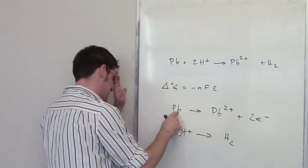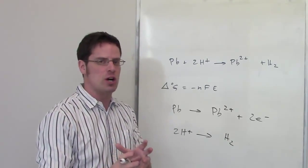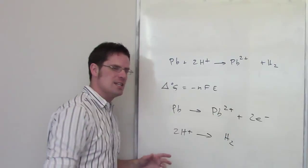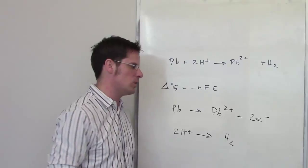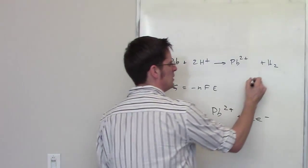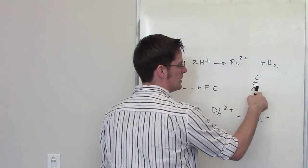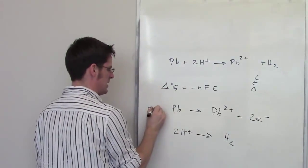You'll notice that what's happening is lead is going from having a zero charge, or oxidation number, to having a 2+ charge. It's becoming more positive by losing electrons. It spits out these two electrons. If you become more positive by losing electrons, that is oxidation. So, this is my oxidation step.